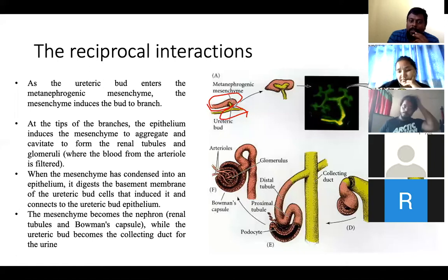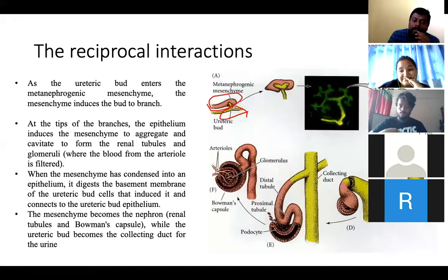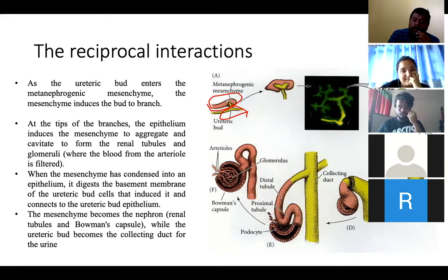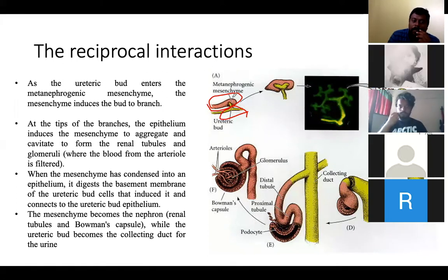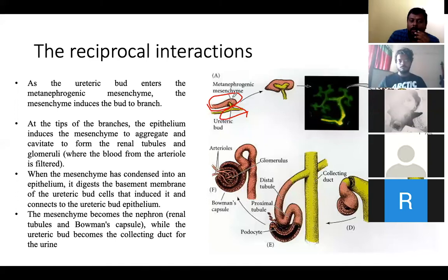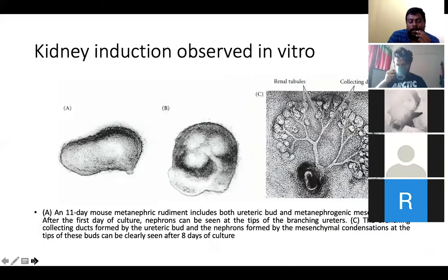For example, the mesenchymal tissue will develop into a mass of tissues and can induce the ureteric bud to branch. At the same time, this ureteric bud branching will influence the mesenchymal tissue to become an epithelial tissue. That is what we will be seeing in this lecture.